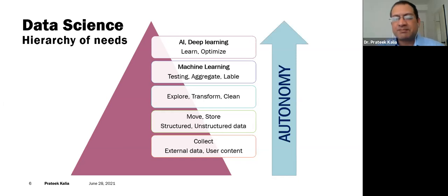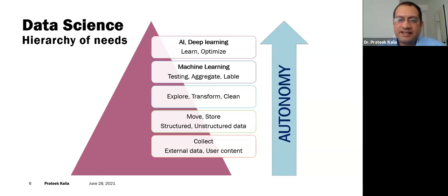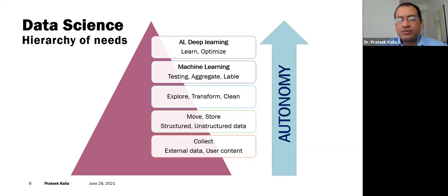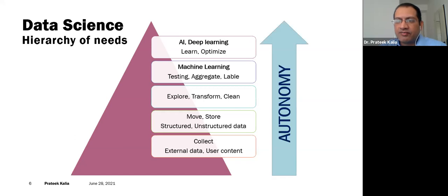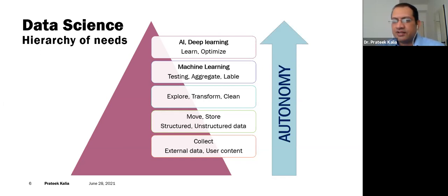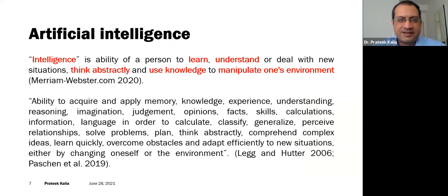When you have stored the data, you explore it, transform it, and clean it — for example, checking for normality and missing values. Once the data is ready, you put it into analysis: testing, aggregation, and labeling. You may run regression analysis to see results and find model fit. Through machine learning, the machine tries to find an optimum model fit for you. The next step is artificial intelligence and deep learning — learning and optimizing — and this whole process is highly autonomous without human intervention.